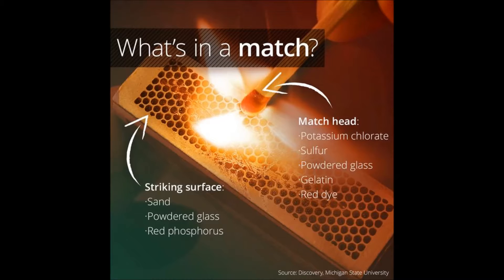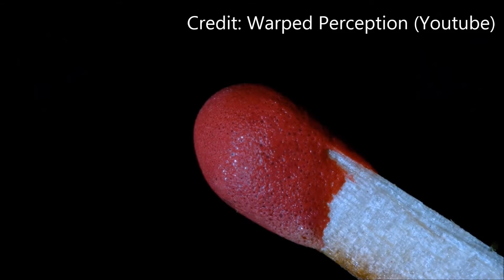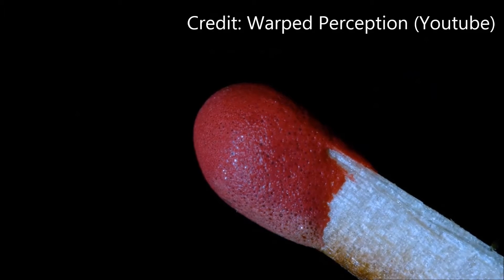And so when you strike the match on the match box, there is heat generated, and that heat is what starts to decompose the potassium chlorate into potassium chloride, and then it gives off oxygen. That oxygen then reacts with the sulfur compounds, and that's what actually allows the ignition of the match head, which then lights off the wood.